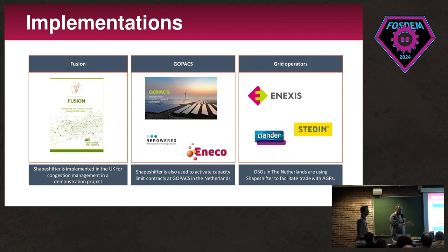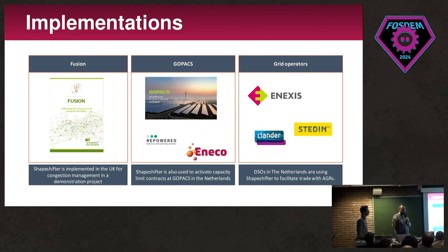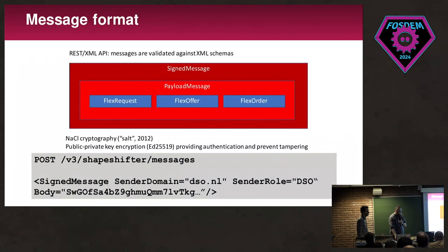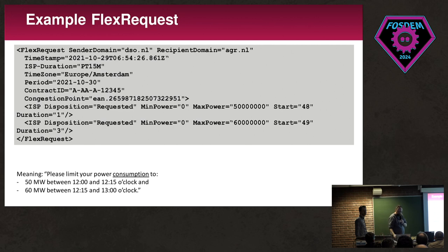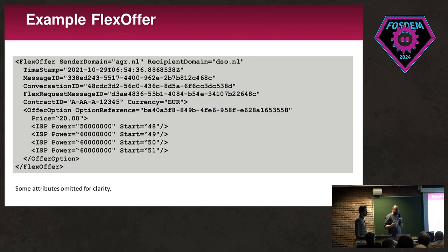There was a demonstration project in the UK called Fusion with good results. GoPax is running in the Netherlands, congestion service providers are also implementing Shapeshifter, and grid operators themselves use it to facilitate flexibility trading. A simple example of the protocol: it's XML-based, where the DSO indicates what flexibility is required; the prosumer replies with one or more offers of available flexibility; and the grid operator replies saying 'I want to use your flexibility during these hours to solve a specific congestion problem.'